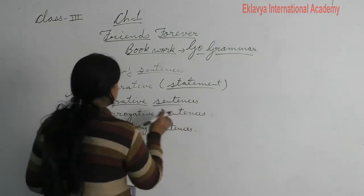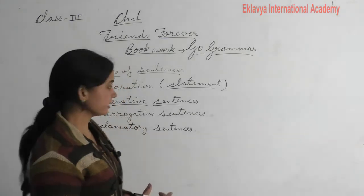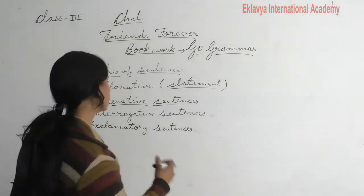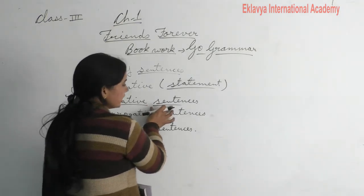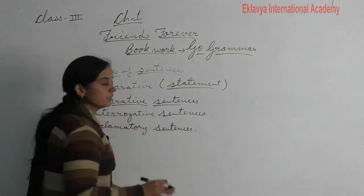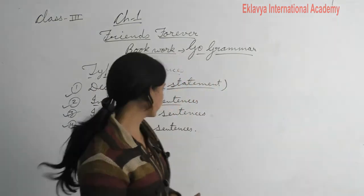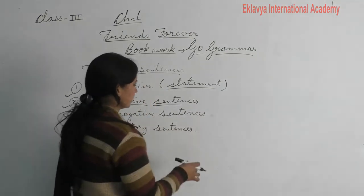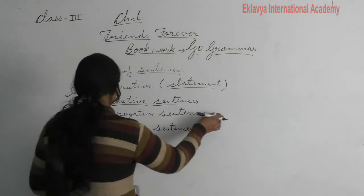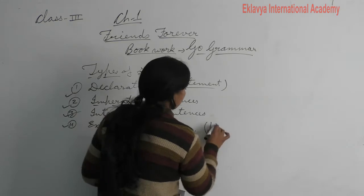The second one is imperative sentences. Imperative sentences give us commands, orders, and requests — this type of sentence is called an imperative sentence. Interrogative sentences: when a sentence asks a question, then it is called interrogative.